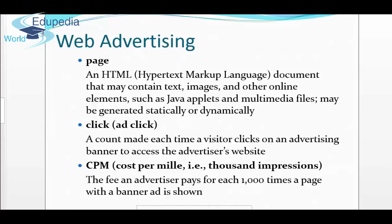A web page is an HTML or hypertext markup language document that may contain text, images, and other online elements such as Java applets and multimedia files, and may be generated statically or dynamically. An ad click is a count made each time a visitor clicks on an advertising banner to access the advertiser's website — if you've ever been browsing and found an advertisement anywhere on the page and clicked on it, that takes you to the advertiser's page.